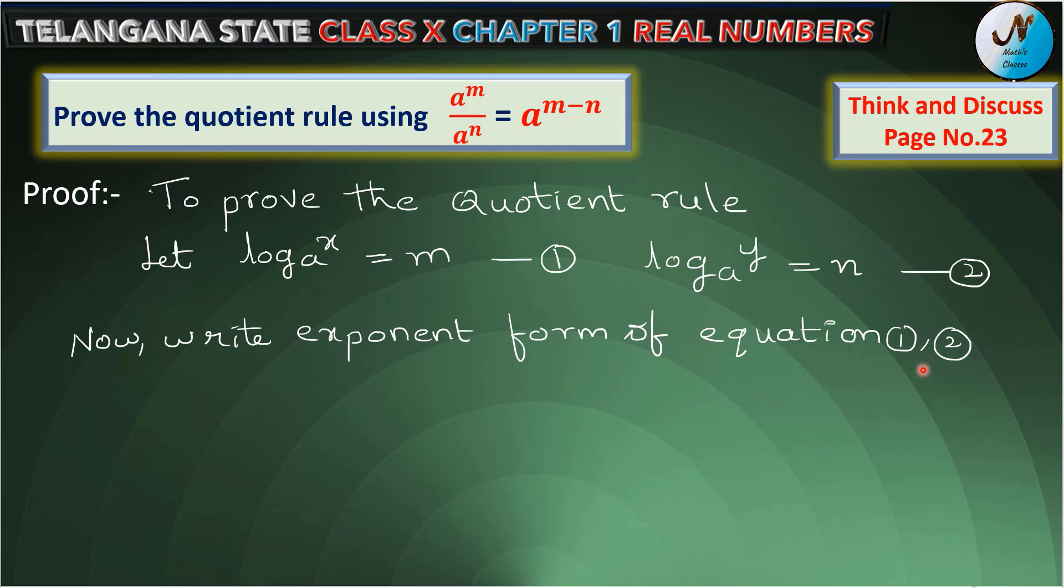Now write exponent form of the above equations 1 and 2. Then equation 1 implies x is equal to a power m. Let this one as equation 3. Next equation 2 implies y is equal to a power n. Let this one as equation 4.